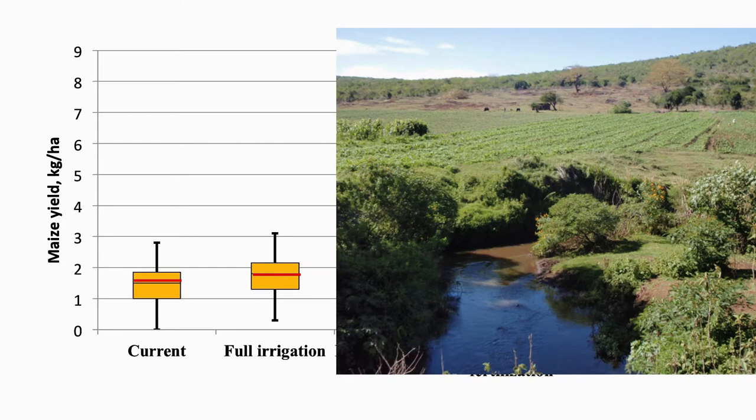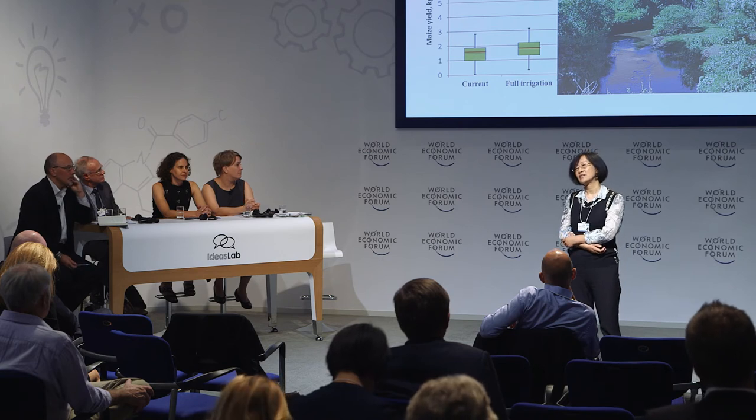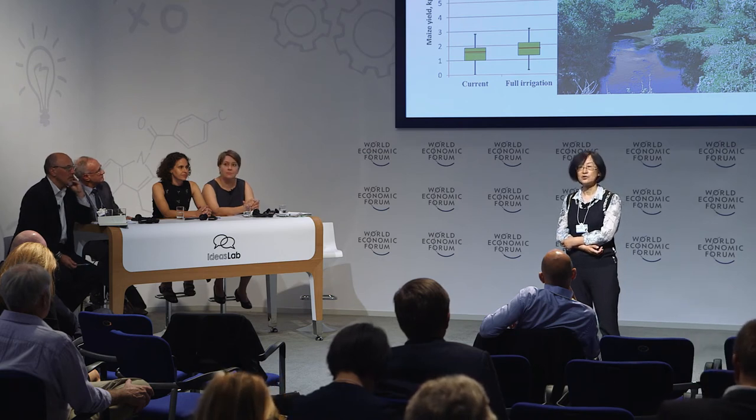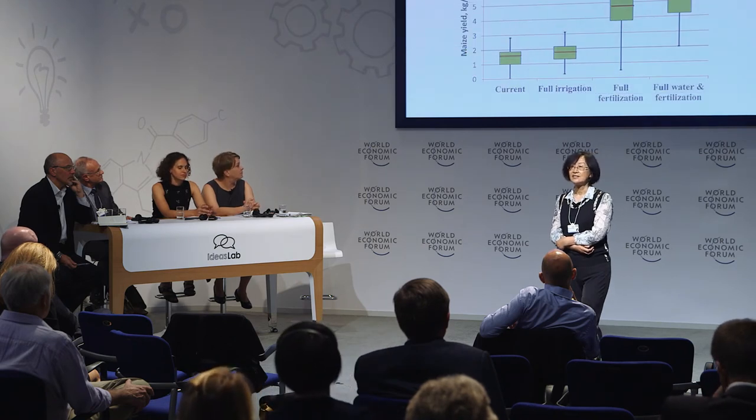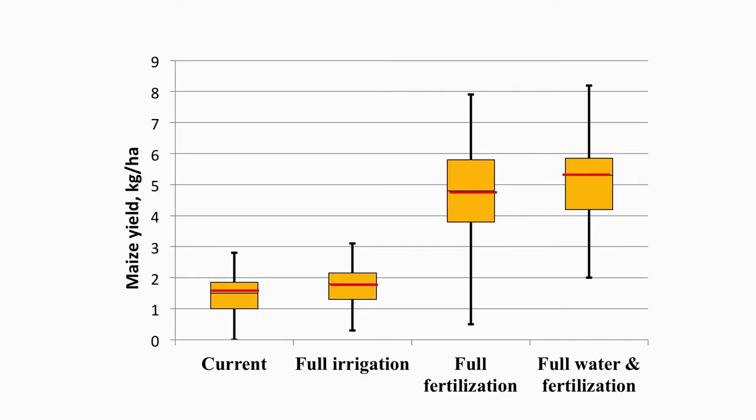The total height of each bar shows the range of yield, and the red line shows the average yield of maize at this moment for the whole continent. The second bar shows what happens if we increase the water supply to meet the demand of crops — it doesn't have much impact, as the yield doesn't increase much.